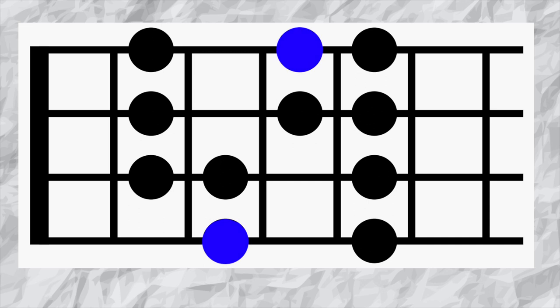The interval is called a tenth as it's the third displaced by an octave. So if you count through the intervals of the major scale it's one two three four five six seven eight nine ten.